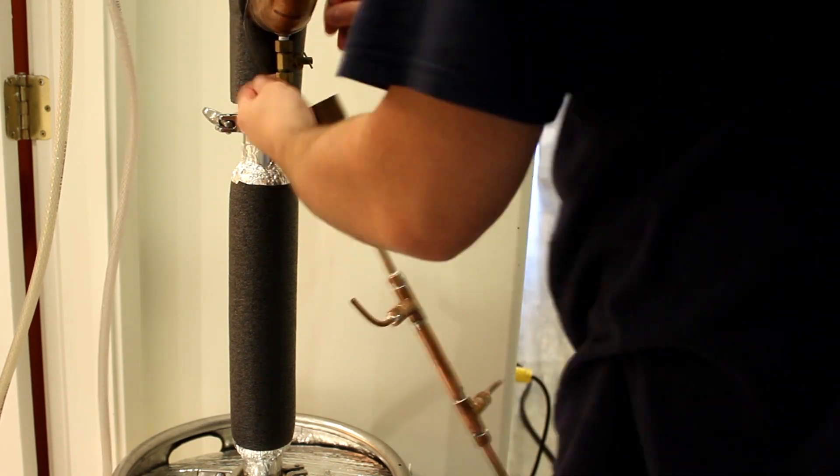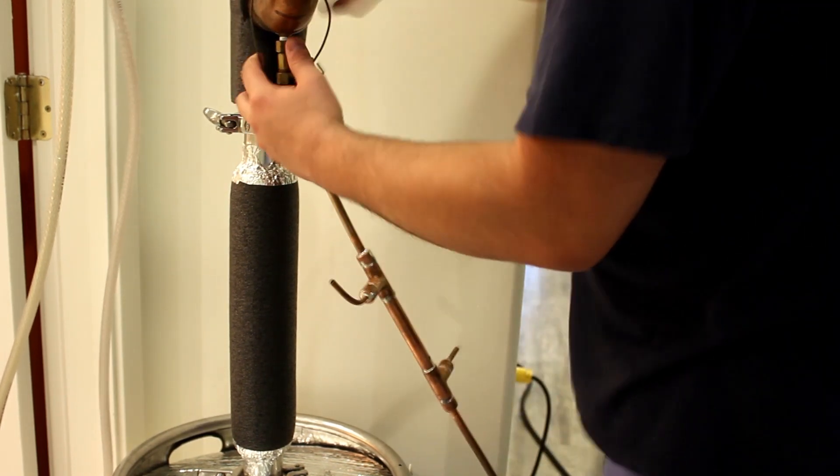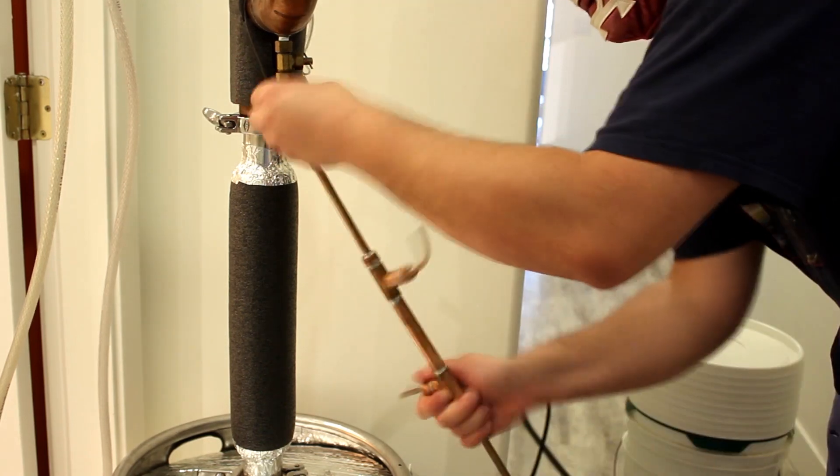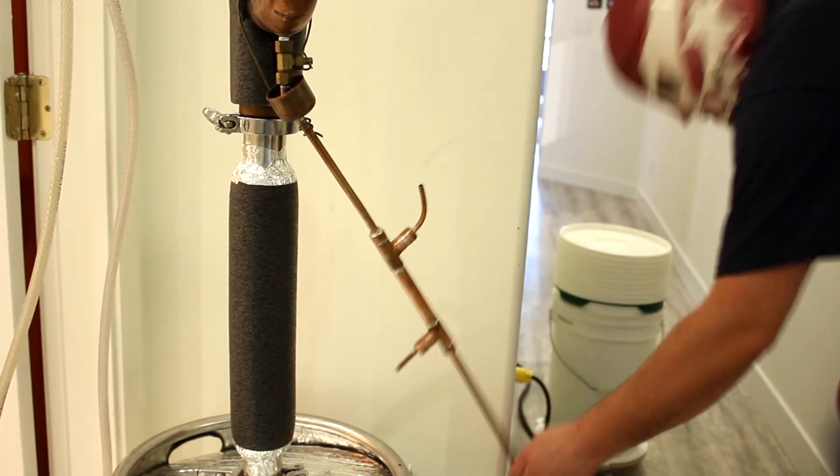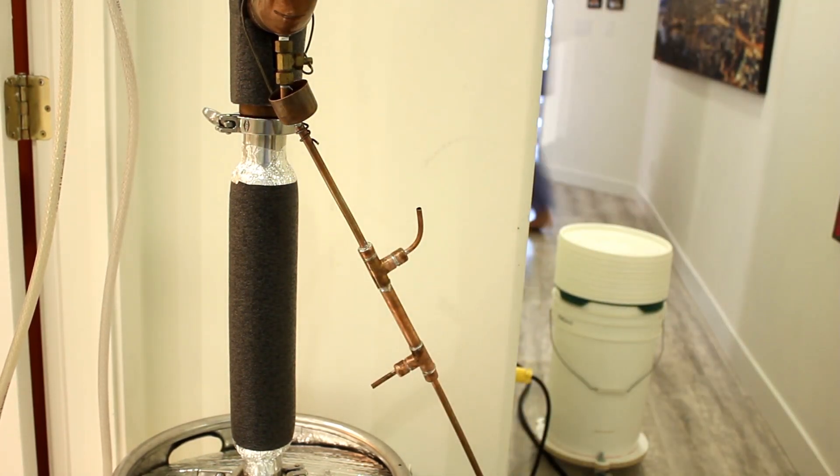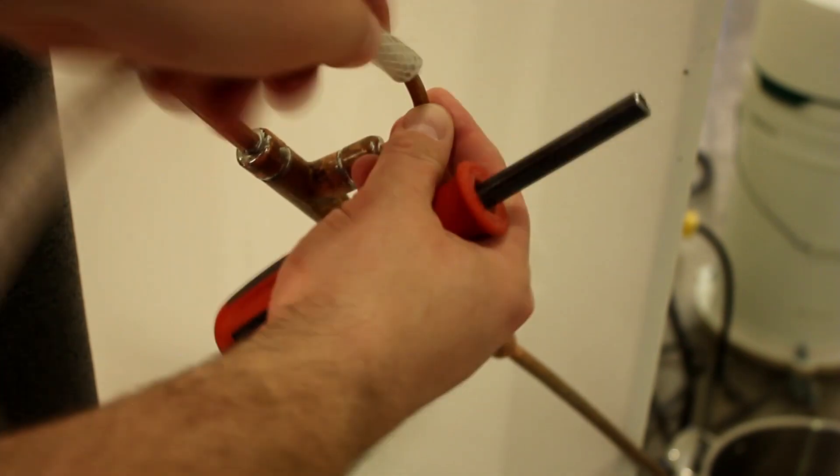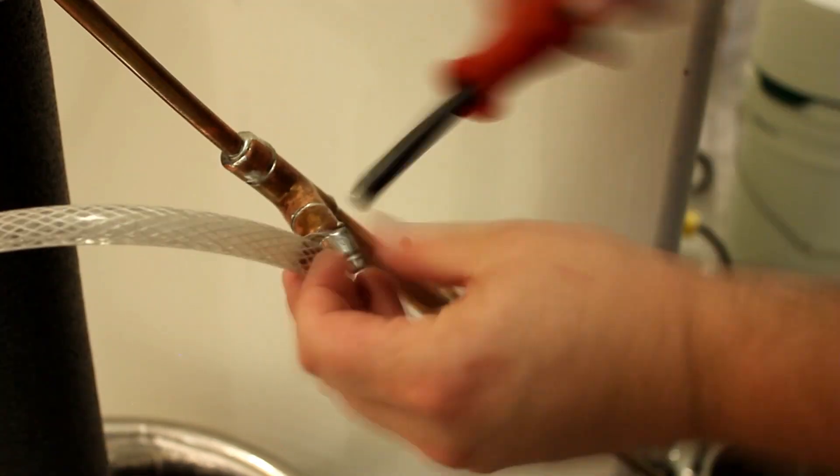This issue of having hot distillate coming off your stripping run, I think that's more specific to a liquid management still head than something like a pot still that typically has a shotgun condenser. In my still, once that vapor gets condensed back to a liquid, it falls away from my condenser coil.